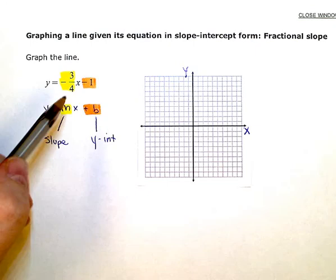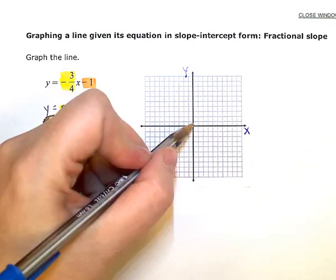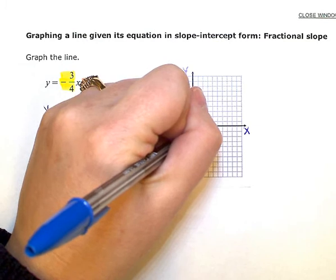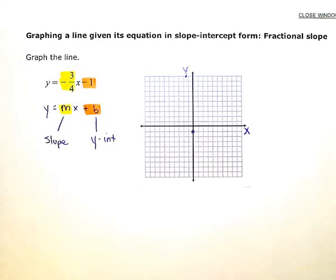So if my y-intercept is at negative 1, I'm going to go on the y-axis down to negative 1 and put a point. And I know my line crosses the axis right there.